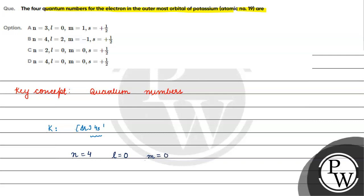M value ranges from minus L to plus L, so M value is also 0. For one electron, by convention, s will be plus half.